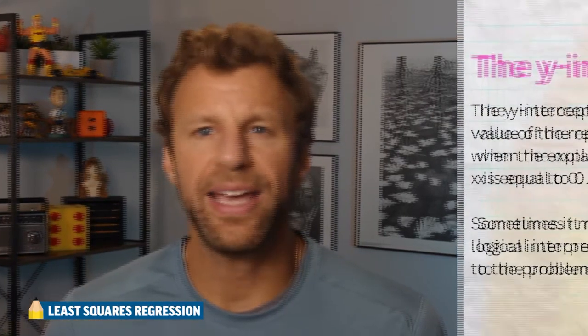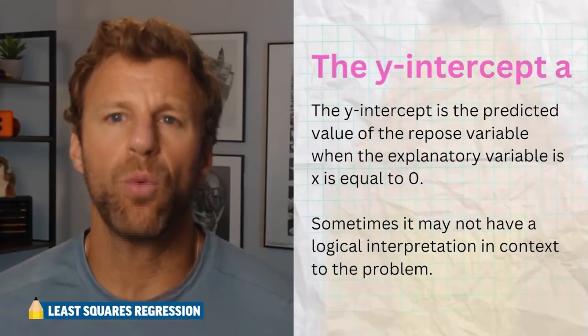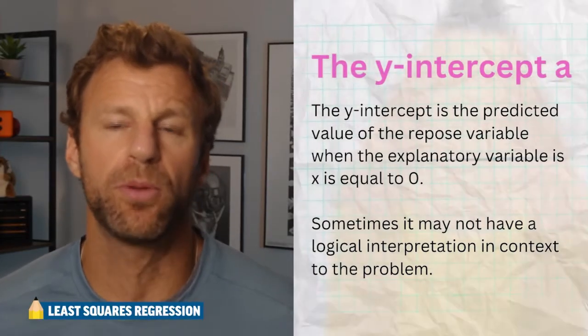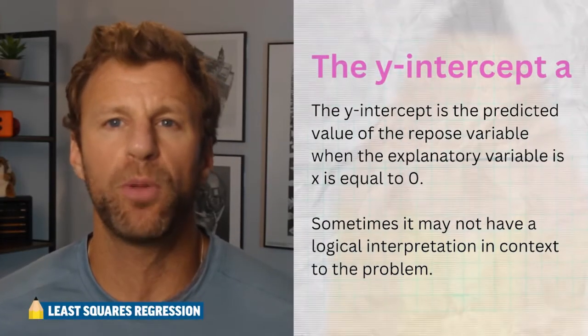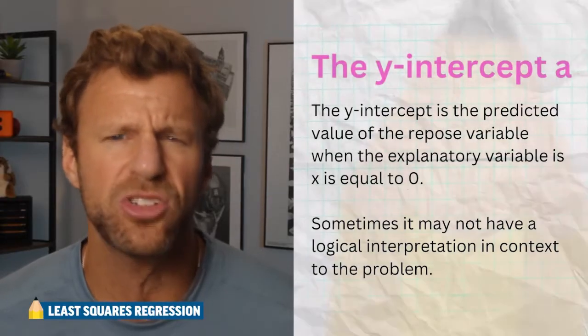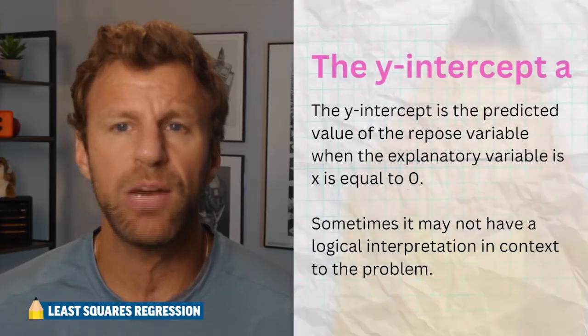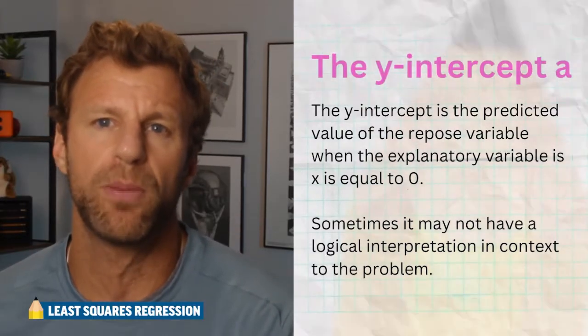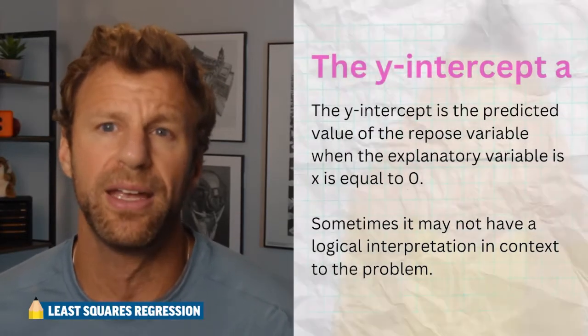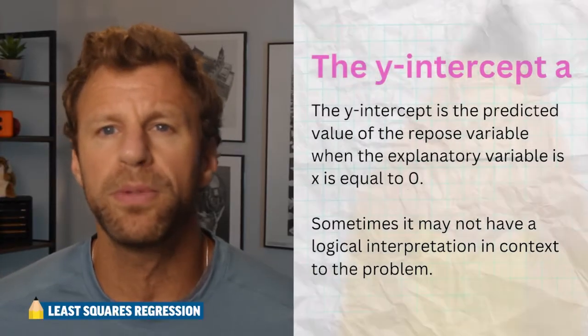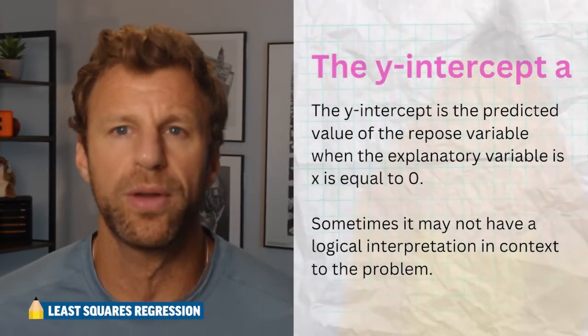The least squares regression line has many facts you need to know. The first is the y-intercept, the 'a' value. The y-intercept is what we predict the response variable to be when the explanatory variable is zero. When x equals zero, what do we predict the response variable y to be? Sometimes this value makes sense in context, and sometimes it does not — and that's okay.